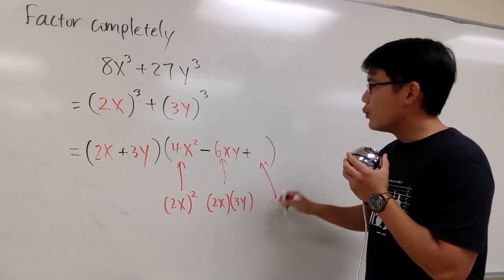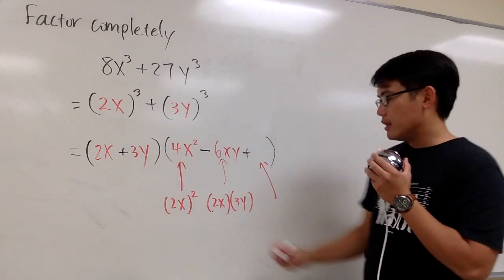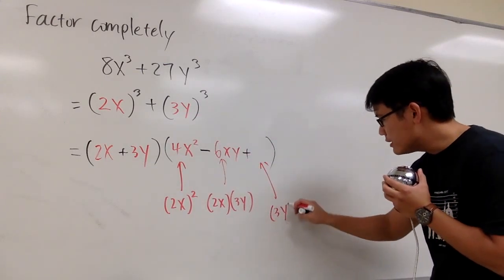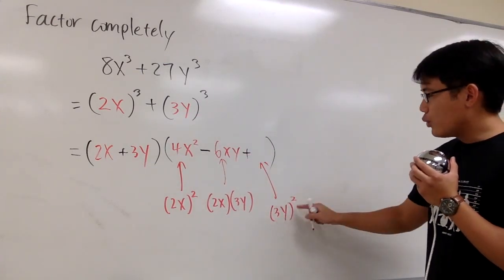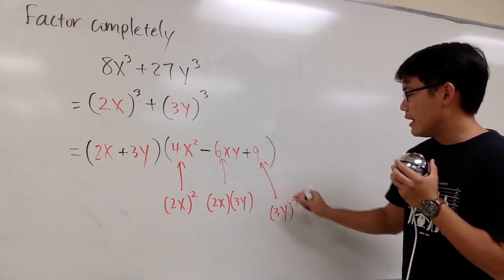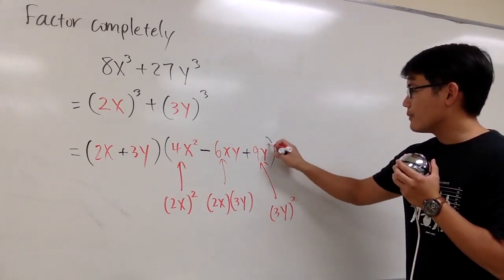For this, we are going to square the 3y. So we'll put down 3y in the parentheses and raise that to the second power. 3² is 9, and y² is just y².